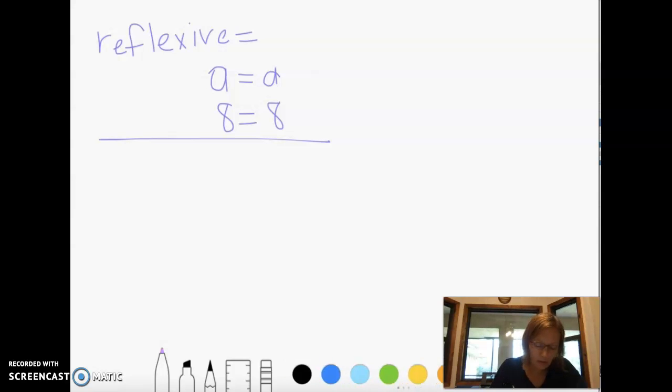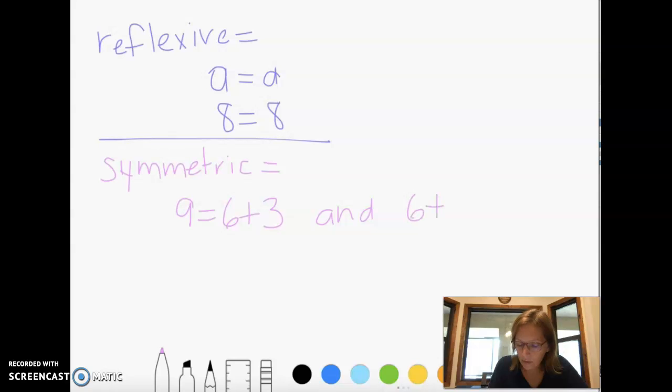The next one is called the symmetric property. Sorry, my handwriting on here isn't the best. So the symmetric property just says you take what's on one side and you kind of flip it over. But they still equal each other. So I can have 9 equals 6 plus 3. And I could also have 6 plus 3 equals 9. Those two problems are the same. They're just written differently. Another example would be a equals b and b equals a.